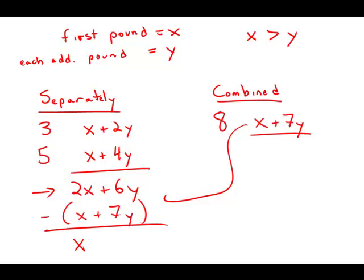What we get is X minus Y. Because we know that X is greater than Y, this is a positive number. Therefore, mailing them separately costs more. Which method is cheaper? The combined method is cheaper, and the cost saved is X minus Y. This is answer choice A.